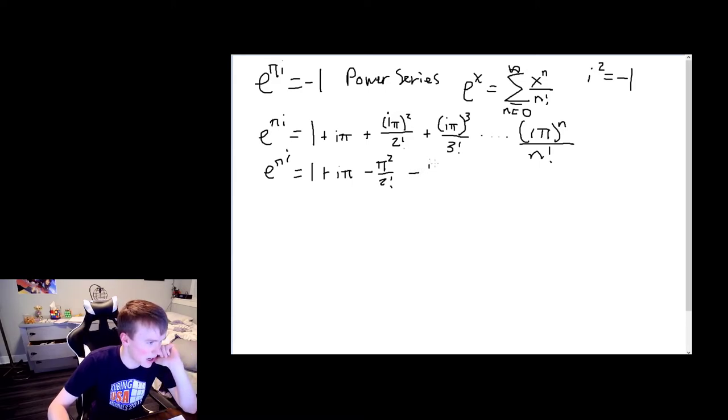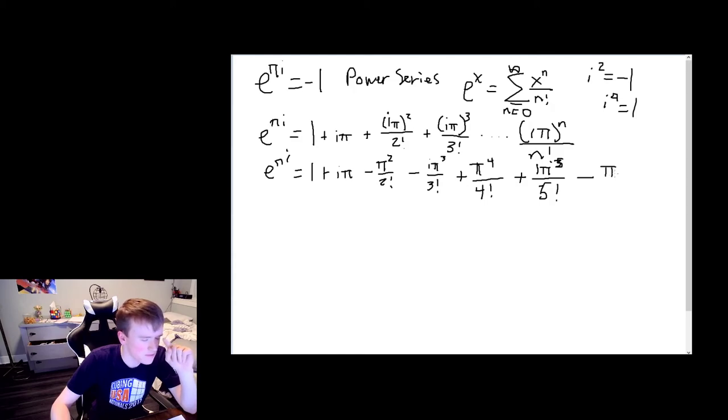So it's actually minus i π³ over 3!. And then the fourth one, we're taking i to the fourth, which is i squared and then squared again, so it actually turns positive. i to the fourth is positive one, right? So then we get plus. If you know Taylor series well enough, you might know where I'm going with this. Then this will be plus π⁴ over 4!. I'll just write this last term and carry on. It'll go back to minus.